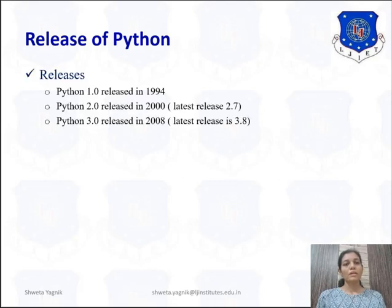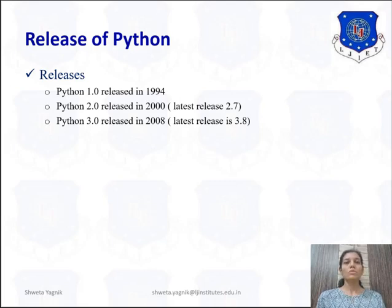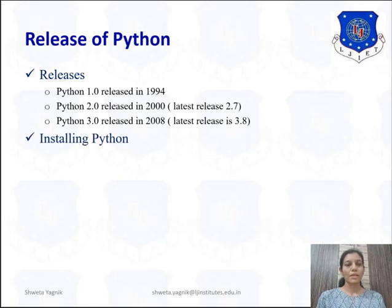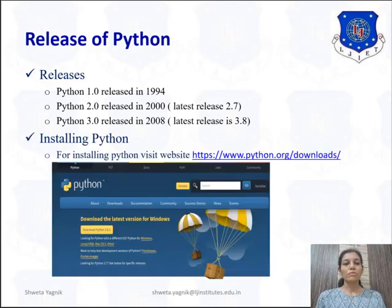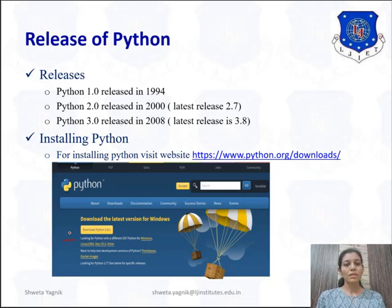Regarding releases of Python: Python 1.0 was released in 1994, Python 2.0 was released in 2000 with the latest version being 2.7, and Python 3.0 was released in 2008 with the latest release being 3.8. In this course, we will deal with Python 2.0 and specifically use 2.7. You can download Python for your platform from python.org/downloads, which provides support for many platforms like Linux, Unix, Windows, Macintosh, and more.